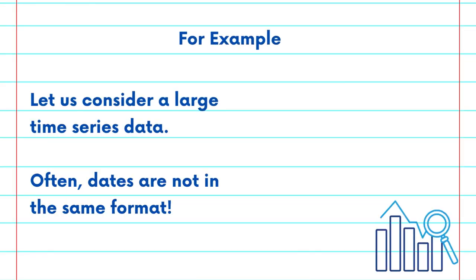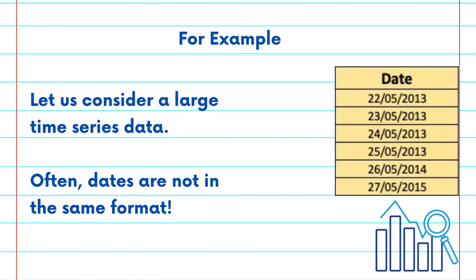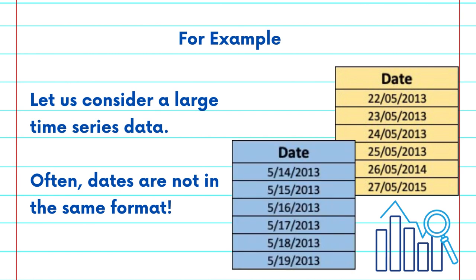For example, let's consider a large time series data. It is quite often observed that dates are not in the same format. They can either be in date, month and year format or they can also follow a month, date and year format.